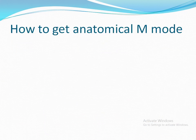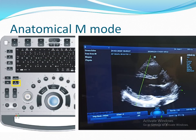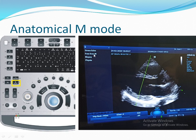How to get Anatomical M-mode: once you press M-mode, you will get a standard line on the screen. You will also have free angle controls on the screen. Press the Cursor button, then choose Free Angle M-mode. You can then change the angle of the M-mode line using the Angle button, or change the position of the line using the trackball.